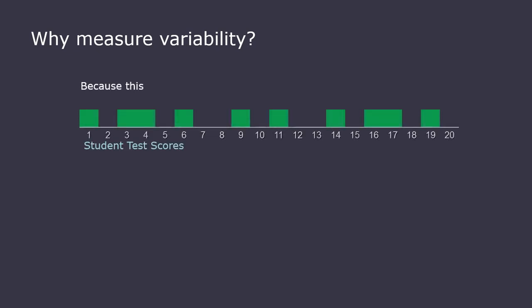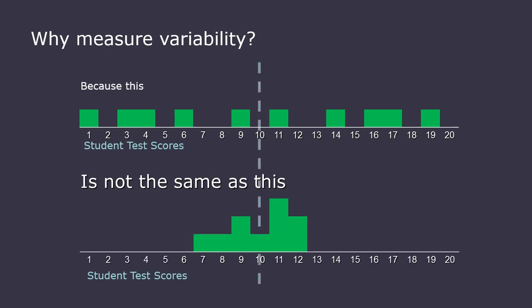Let's remember that we measure variability because there can be spread around the centers, and the center itself doesn't tell us about that. So these two distributions have the same mean, but they have very different amounts of variability or spread, and it's important to know both things.